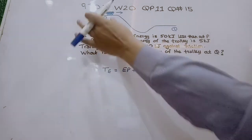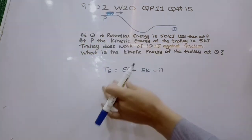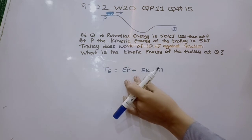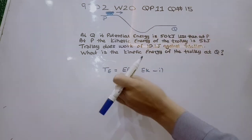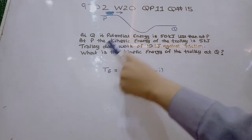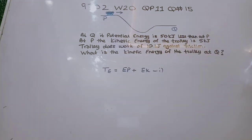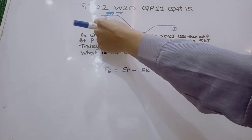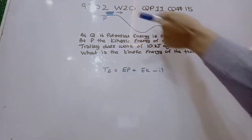At P, the total energy would be the sum of the potential energy and kinetic energy at P. Because the surface is rough and work is being done against friction, the total energy at P would be more than the total energy at Q.